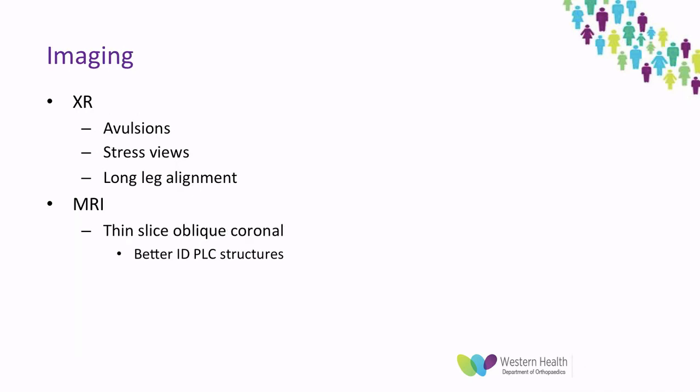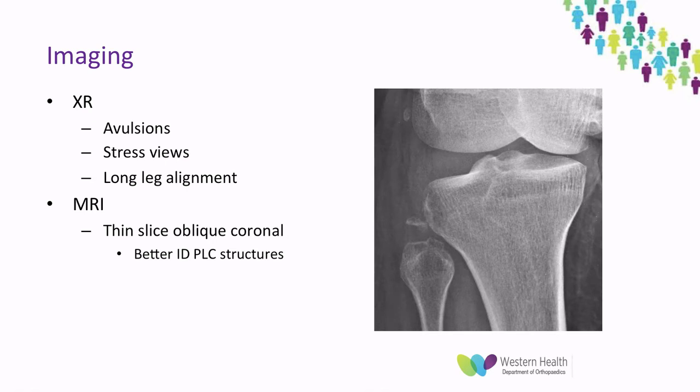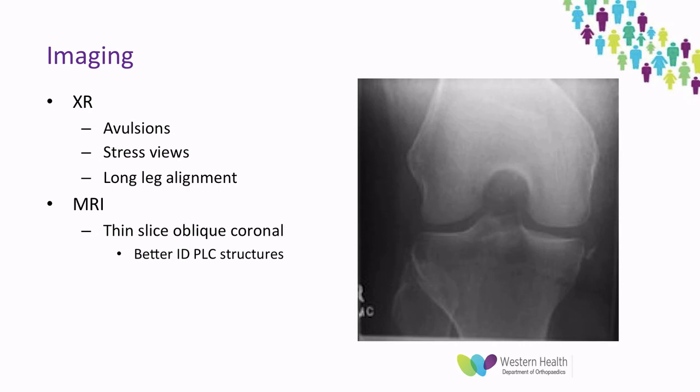In terms of imaging, on plain films you may see an arcuate avulsion, which is an avulsion of the lateral collateral attachment onto the fibular head. You can also see a Segond fracture — a capsular avulsion on the lateral side of the tibial plateau.